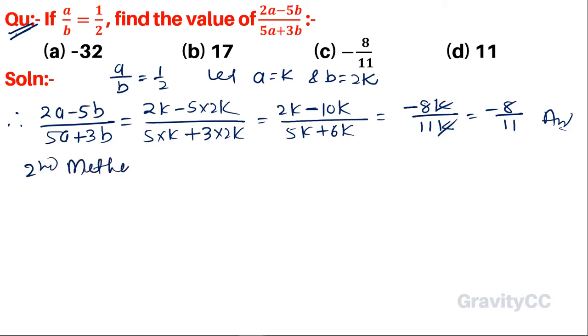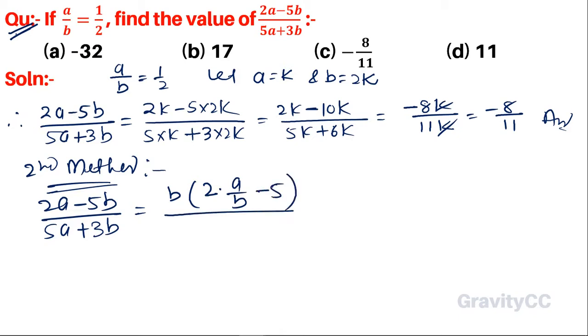In the second method, (2a - 5b)/(5a + 3b) can be rewritten by dividing both numerator and denominator by b: (2(a/b) - 5)/(5(a/b) + 3).